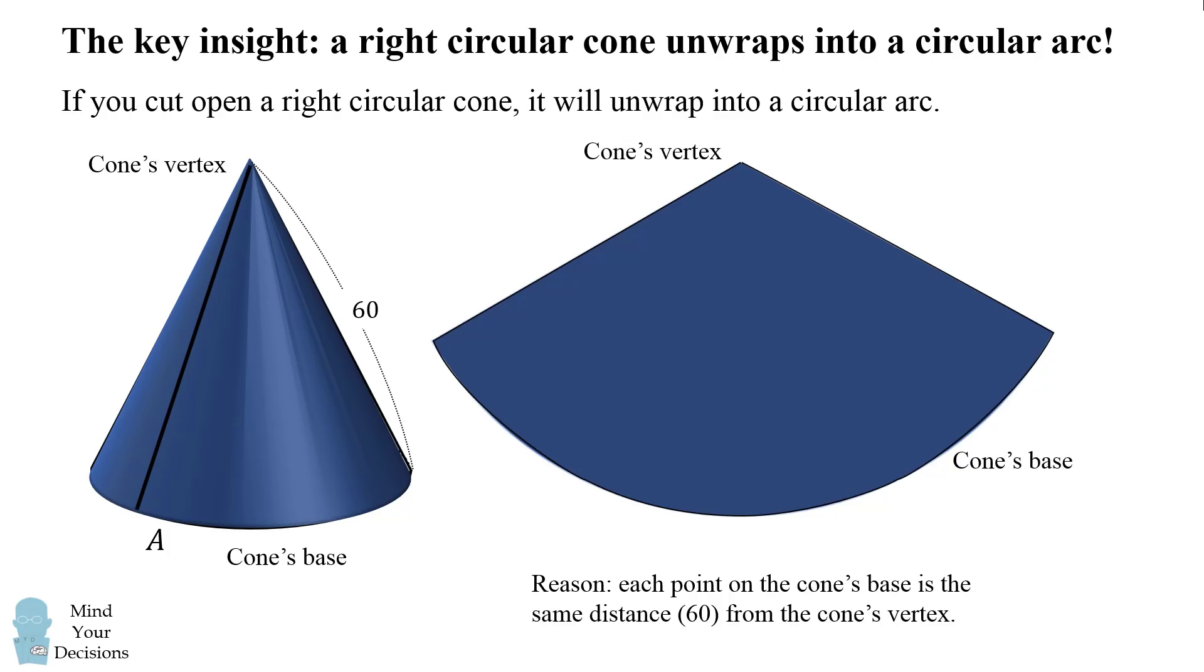Now each line on this cone's vertex to base, this slant height, exactly corresponds to a radius of this circular arc. So that's why we end up with a circular arc, because every distance from the vertex to the base is the same slant height of 60. And so this circular arc has a radius of 60.